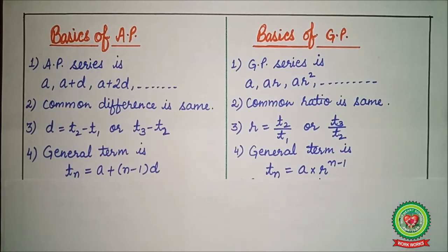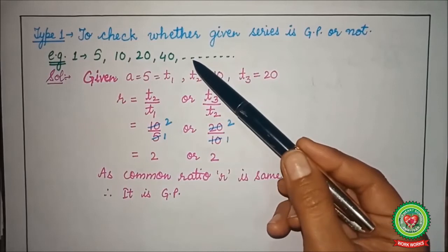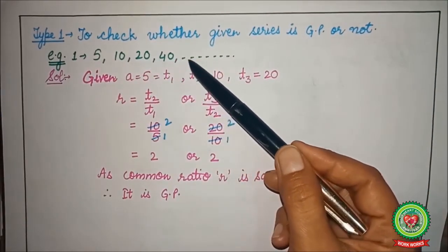Now let's start with the first type of GP. First type is to check whether the given series is a GP or not. Now let's take an example. Series is 5, 10, 20, 40 and so on.